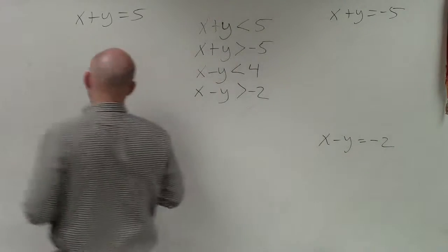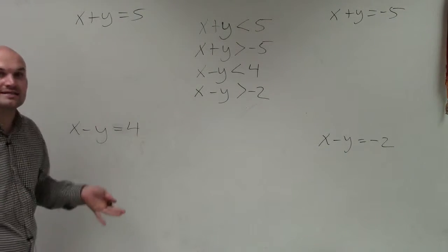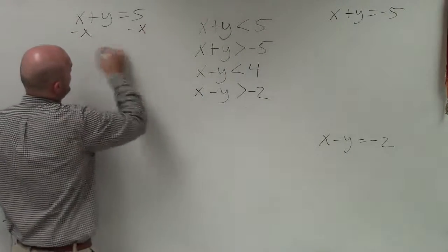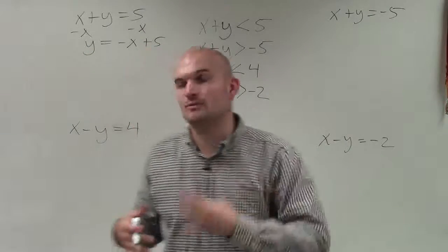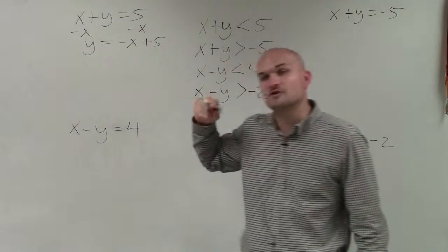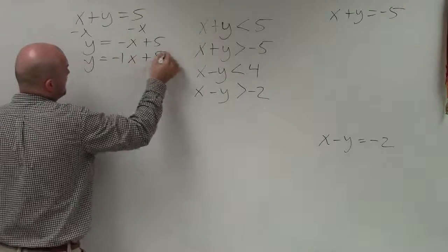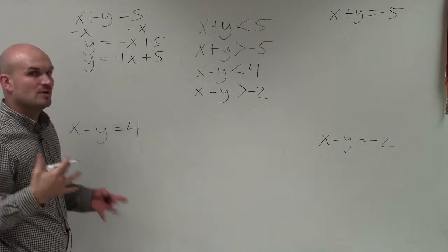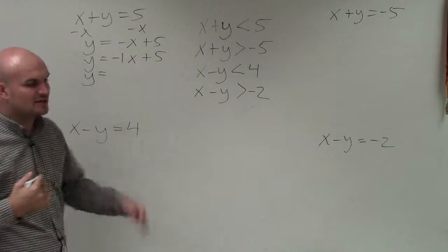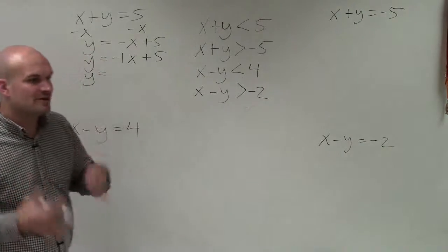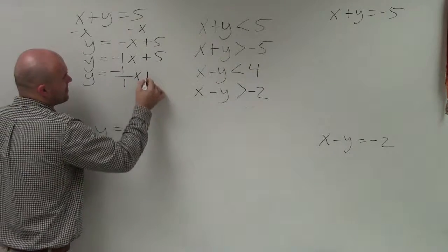When graphing using slope-intercept form, we want to rewrite it so y is isolated. I subtract x from both sides and get y equals negative x plus 5. The slope is the coefficient of x, which is negative 1. We rewrite that as negative 1 over 1, placing the negative in the numerator.